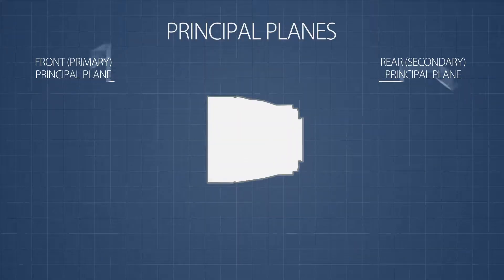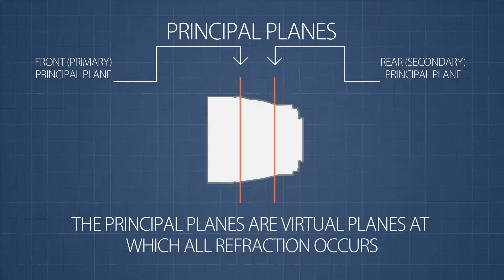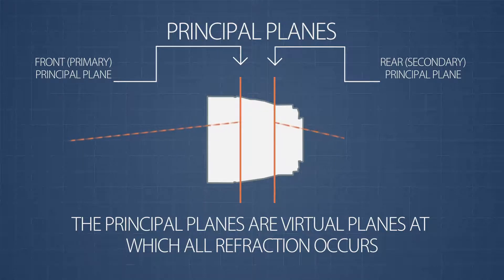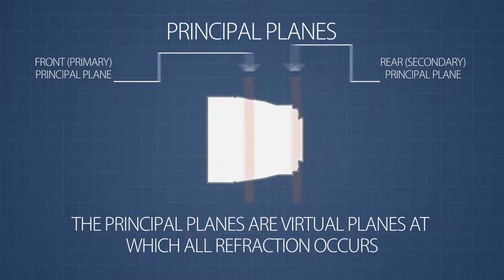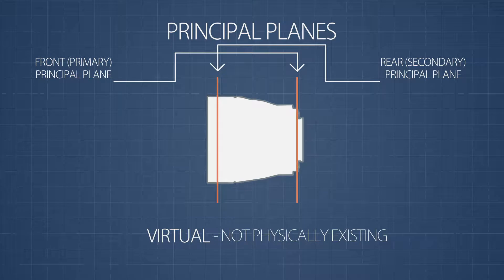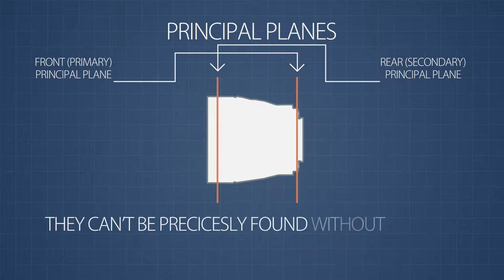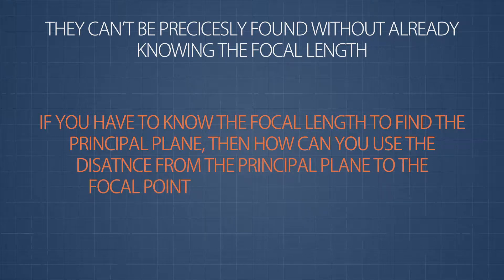Like focal points, there are also two principal planes. The principal planes are virtual planes at which all refraction occurs. What this means is that light entering the front principal plane is seen exiting the rear principal plane from the corresponding point, only with a new direction. What makes the principal planes really strange is that they can occur outside of the physical lens, and they can even occur out of order — meaning the secondary principal plane can be further forward than the primary principal plane. They can't be precisely found without already knowing the focal length.